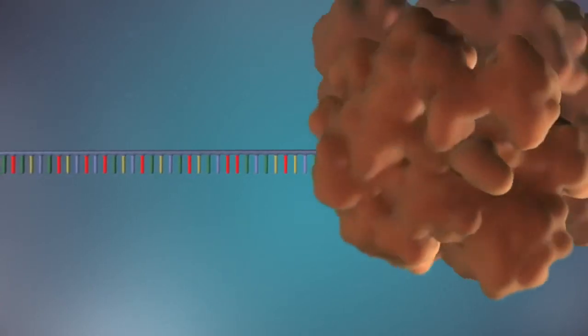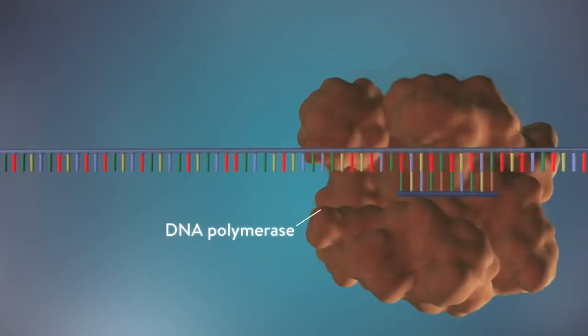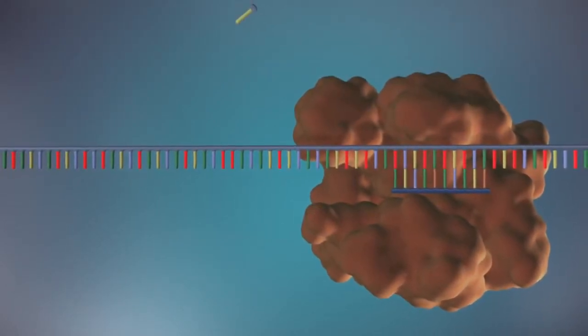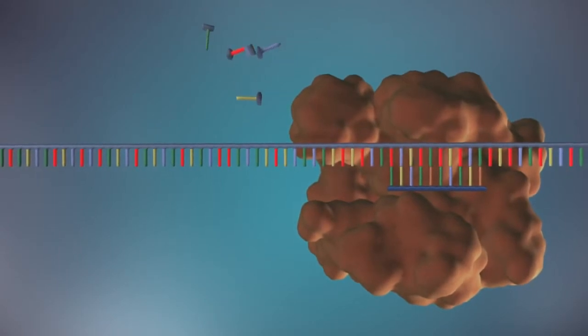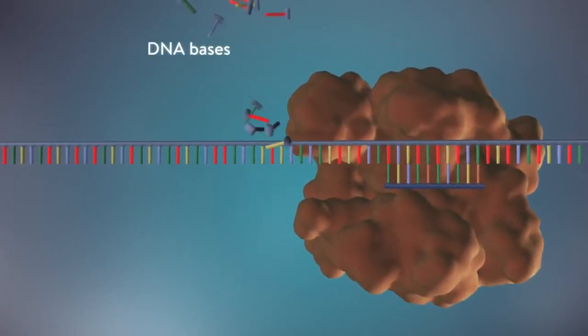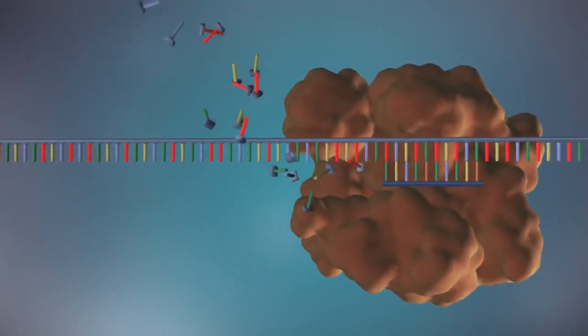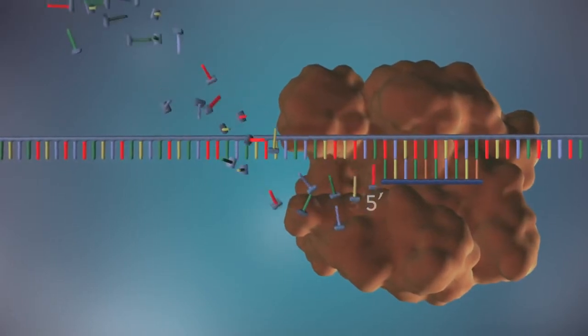An enzyme called DNA polymerase binds to the primer and will make the new strand of DNA. DNA polymerase can only add DNA bases in one direction, from the 5' end to the 3' end.